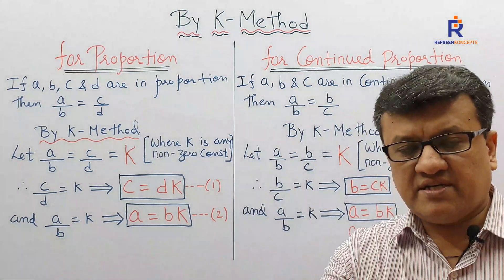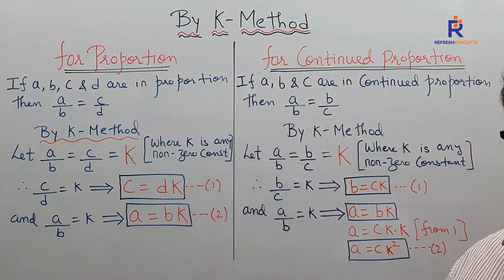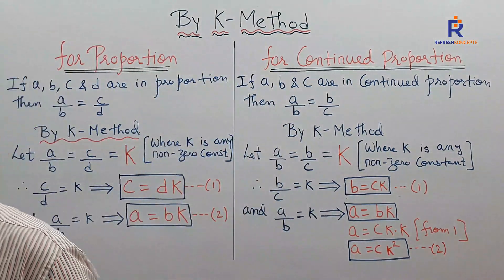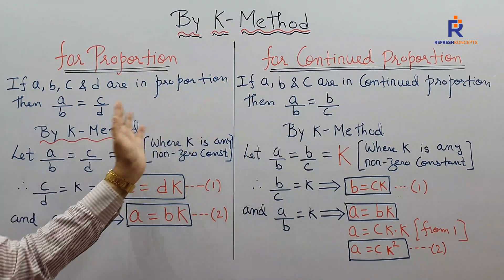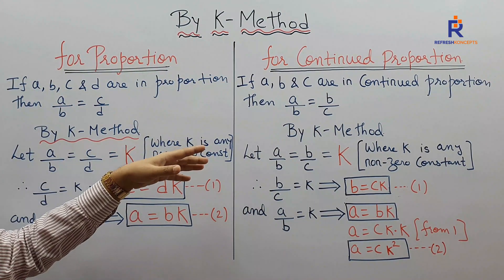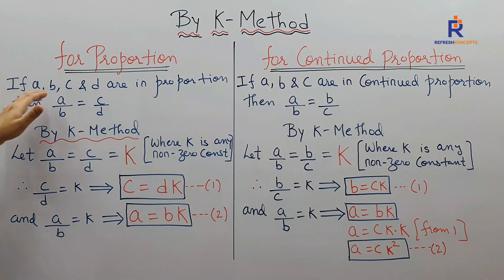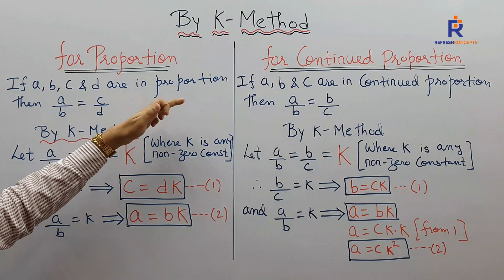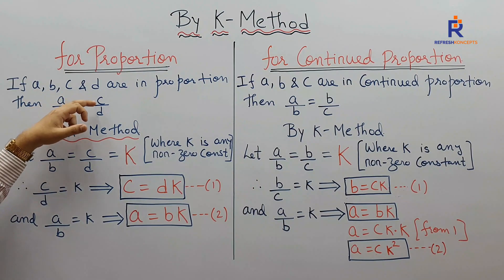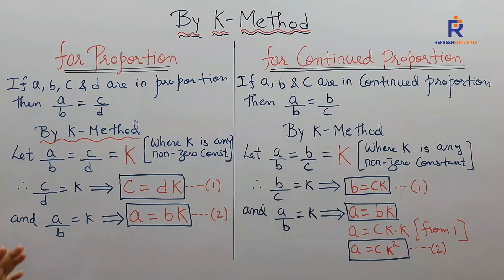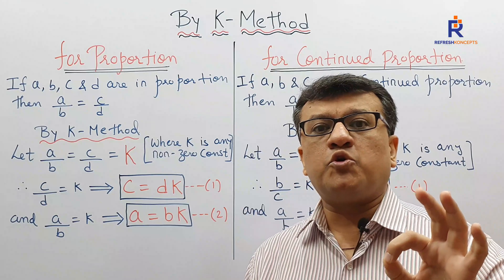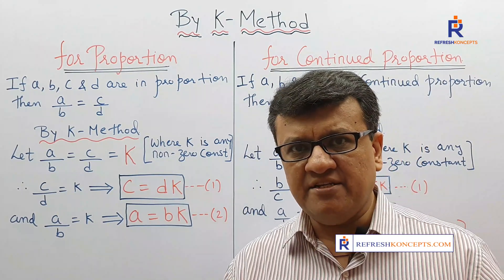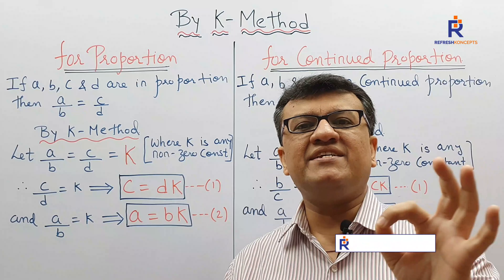So let's start. Given by K method for proportion and continued proportion — both are being explained simultaneously so you can understand the difference. If A, B, C, D are in proportion, then A by B equals C by D. The first method: if you want to prove A, B, C, D are in proportion, prove that AD equals BC.